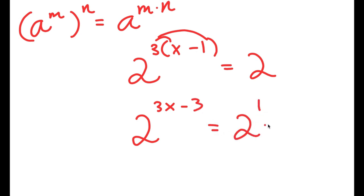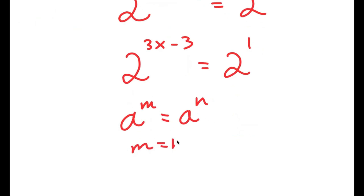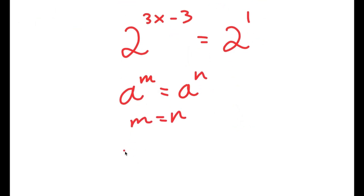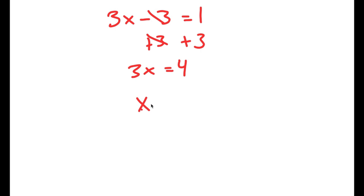And 2 is the same as 2 to the power of 1. Since a to the power of m equals a to the power of n means m equals n, this means 3x minus 3 equals 1. Adding 3 on both sides gives 3x equals 4, and therefore x equals 4 over 3.